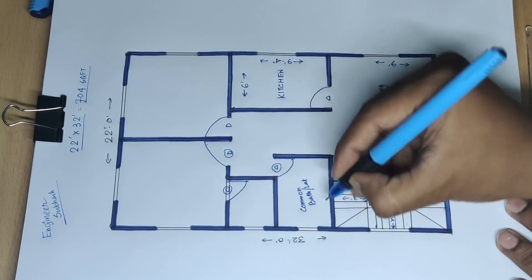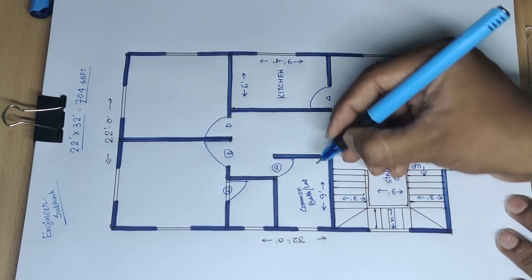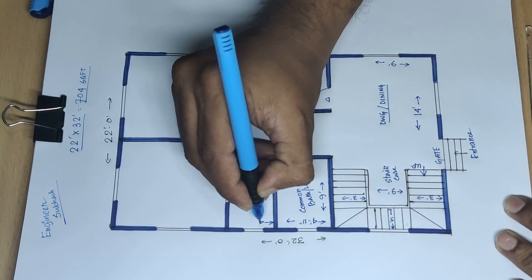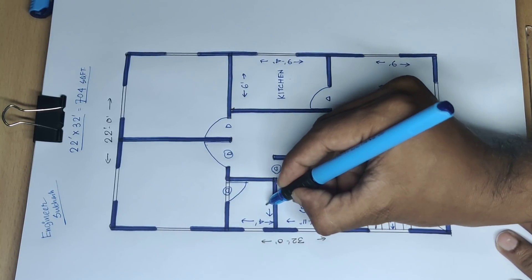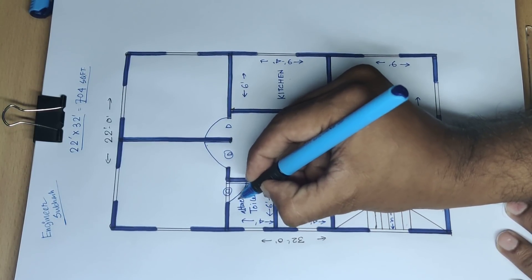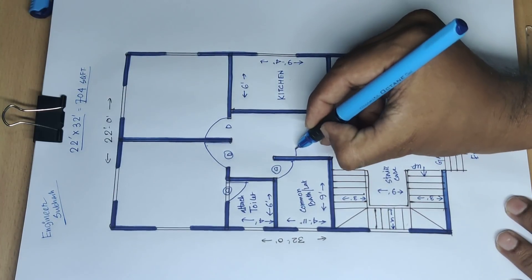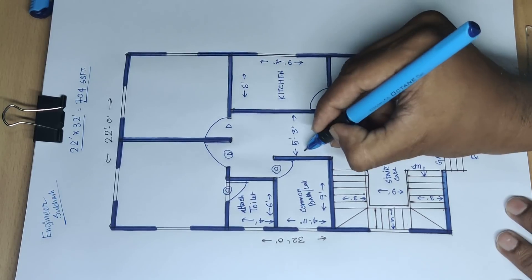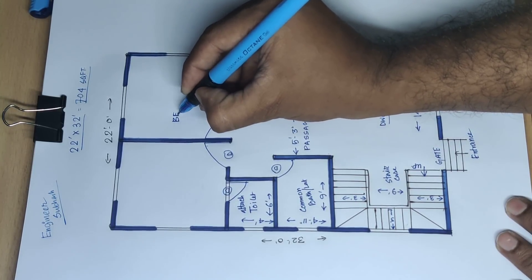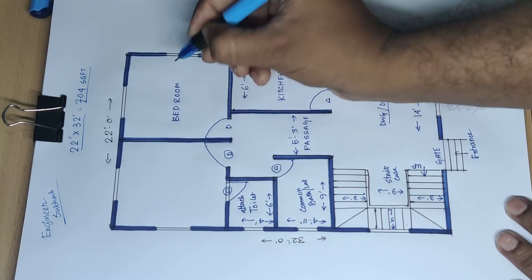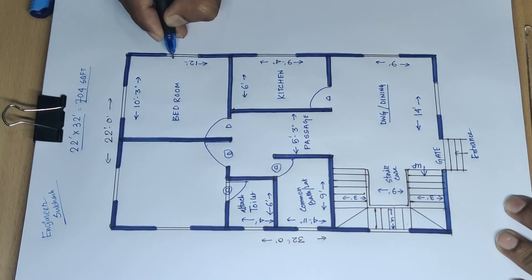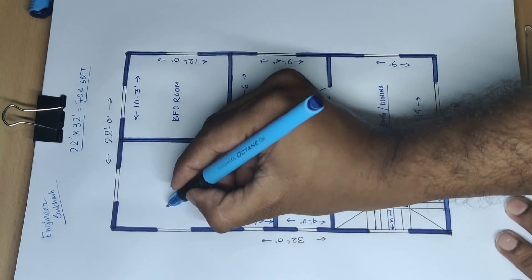This is common bath and toilet — 9 feet wide and this side 4 feet 11 inch length, this side 4 feet, and this side 6 feet length attached toilet. This passage is 5 feet 3 inch wide. This is bedroom — this side length 10 feet 3 inch and this side 12 feet.